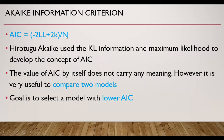The first is Akaike information criteria. Akaike, a statistician, used the KL information and maximum likelihood to develop the concept of Akaike information criteria. The formula is: minus 2 log likelihood plus 2K, where K is the number of parameters in the model divided by the sample size. The value of AIC by itself does not carry any meaning; however, AIC is very useful to compare two models. The goal is to select a model with lower AIC.